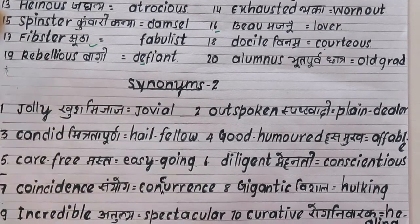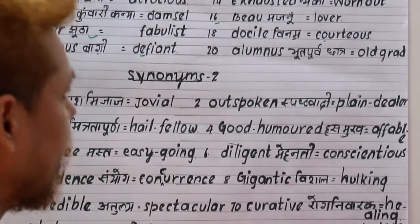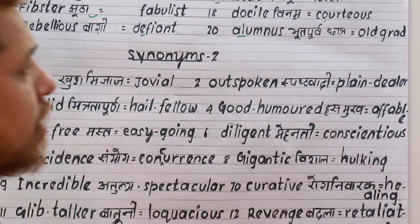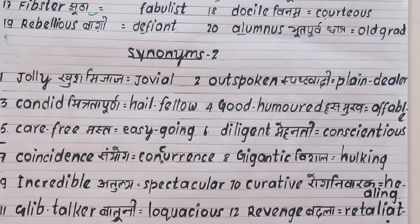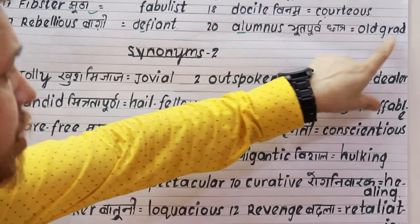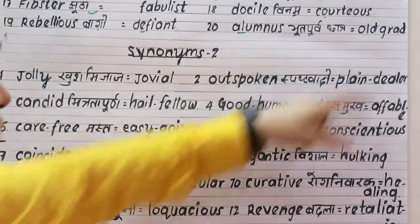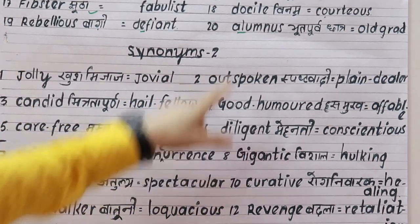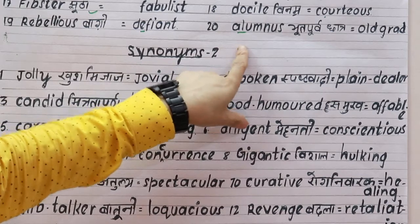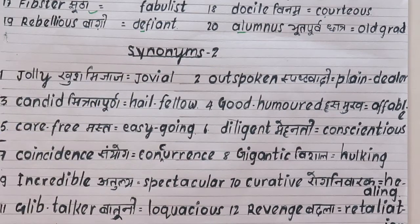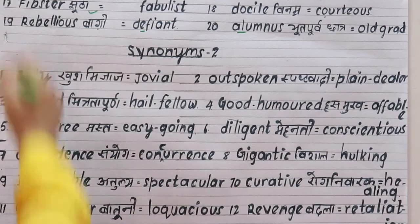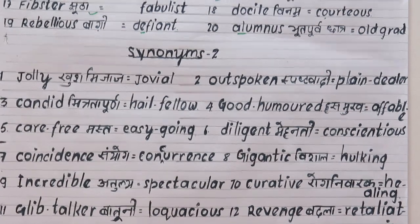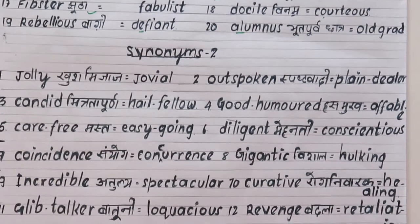Number twenty is 'alumnus', meaning an old student or graduate of a college. For example: I am the alumnus of this college. These are the 20 words in Part One — you must learn them.